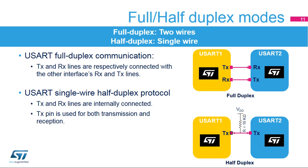The USART supports full duplex communication, where TX and RX lines are respectively connected with the other interface's RX and TX lines. The USART can also be configured to follow a single-wire half-duplex protocol, where the TX and RX lines are internally connected. In this communication mode, only the TX pin is used for both transmission and reception. The TX pin is always released when no data is transmitted, thus it acts as a standard I/O in idle or reception modes.